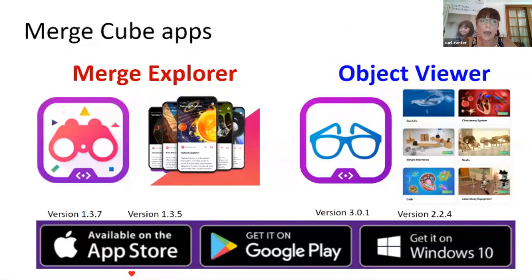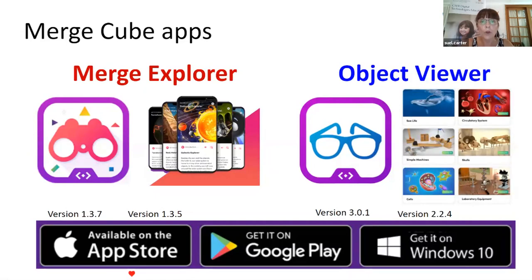Let's dive into the apps. Merge Cube have recently released two new apps: Merge Explorer and Object Viewer. The Explorer has binoculars — like students going out exploring — while the Viewer is about looking at something, so you need glasses to look at it. These are now available on the App Store, Google Play, and the Microsoft Store, and they work on Windows 10. The most current version of the Explorer app is 1.3.7 on the App Store, while 1.3.5 is on Google Play. Using iPads or mobile devices through the App Store will give you the most latest version.